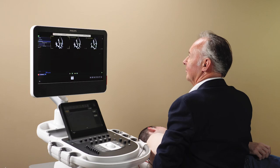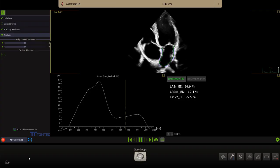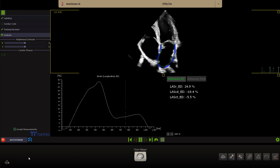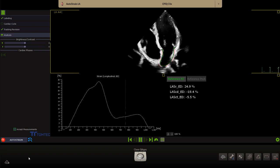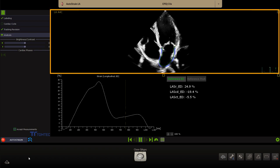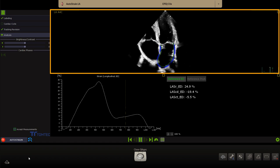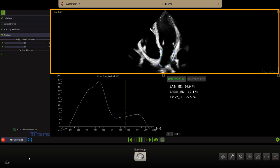The one button push AUTOSTRAIN LA provides a fast and reproducible longitudinal strain measurement of the left atrium. The AUTOVIEW recognition and RY placement algorithm automatically assigns the view label and places the contour of the left atrium. The AUTOVIEW recognition and tracking can be reviewed on the dynamic 2D loop.